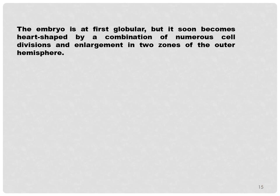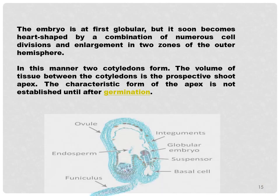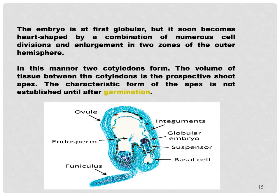The embryo is at first globular in form but soon becomes heart-shaped by a combination of numerous cell divisions and enlargement into two zones of the outer hemisphere. In this diagram you can see an ovule with endosperm, integuments, globular embryo, suspensor, and the basal cell.